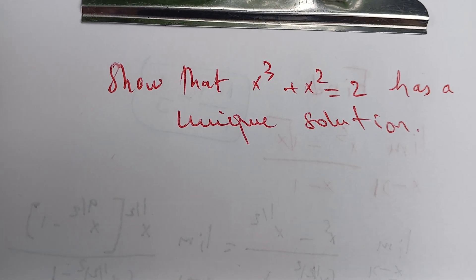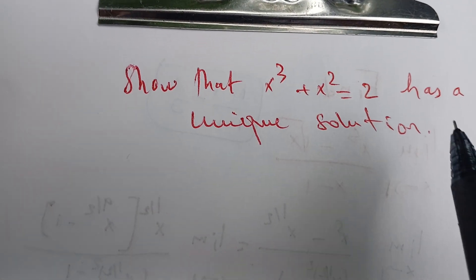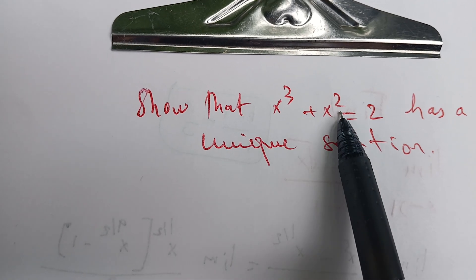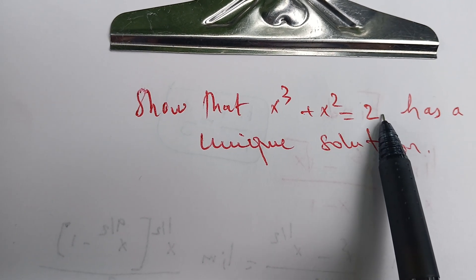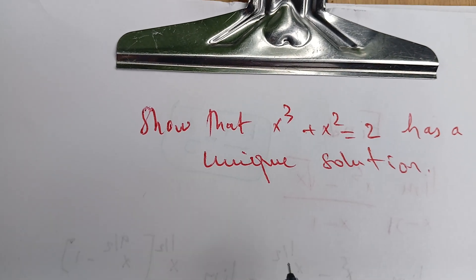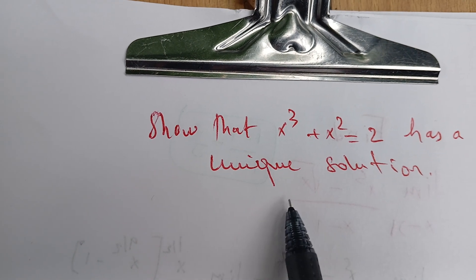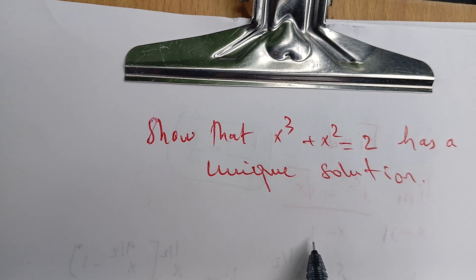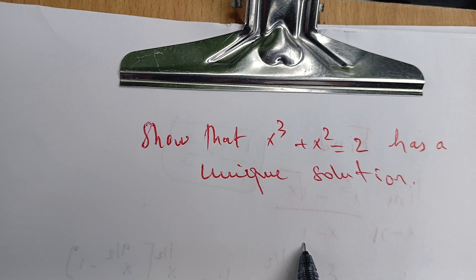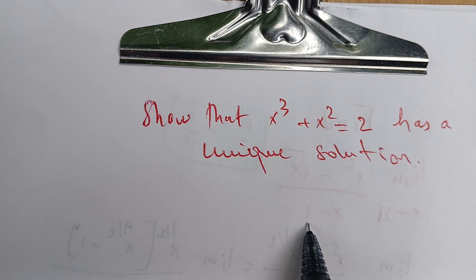In this video we're going to try to solve the following question: we're going to show that x cubed plus x squared equals 2 has a unique solution. This might not seem obvious, but we can use some facts and see what we can get.